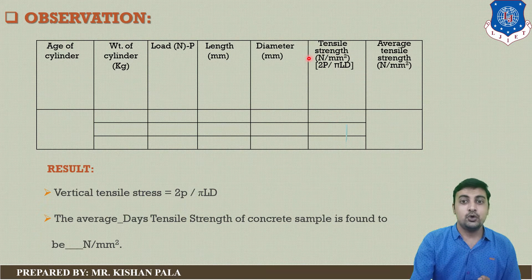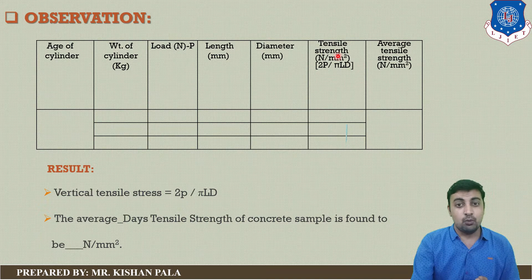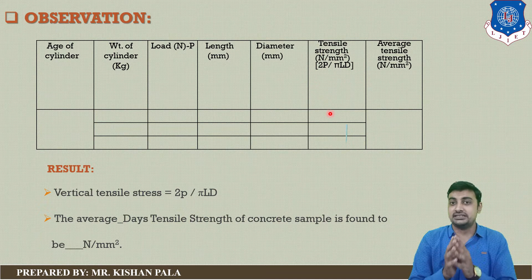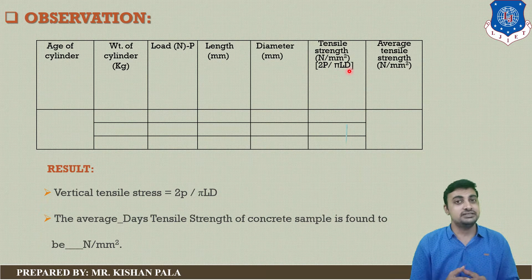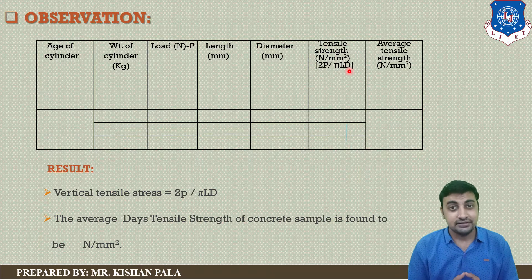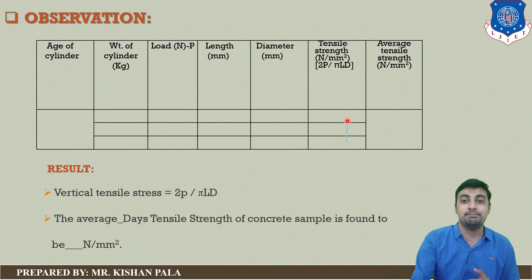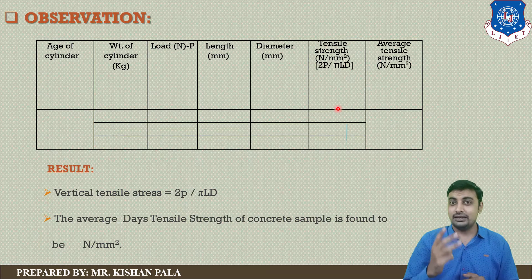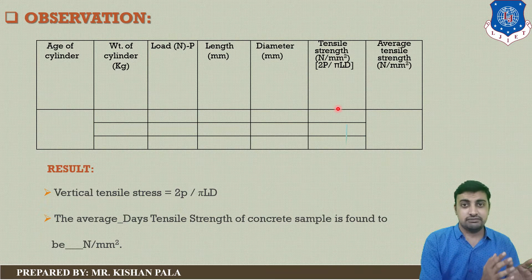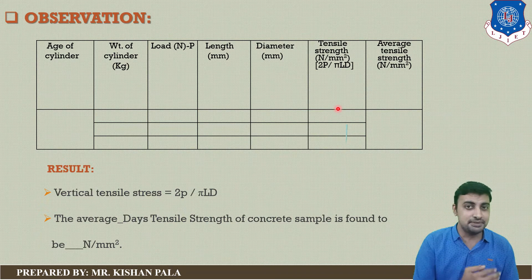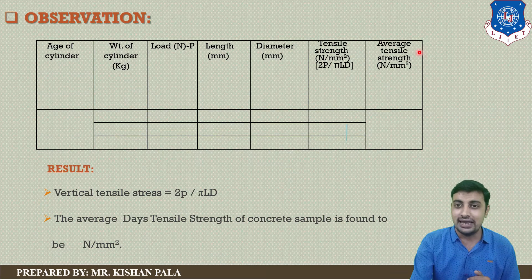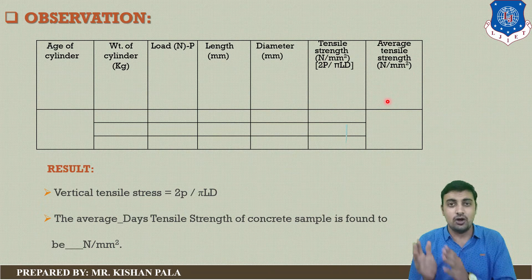The length will be 300 mm and the diameter will be 150 mm. The tensile strength is calculated with the equation: 2P / (π × L × D), where P is the load at which the specimen fails, L is the length, and D is the diameter. You calculate the tensile strength for each of the 3 specimens tested at 7 days or 28 days, and then calculate the average tensile strength.